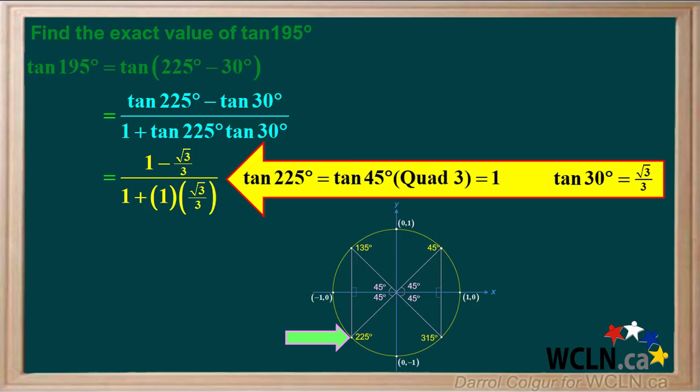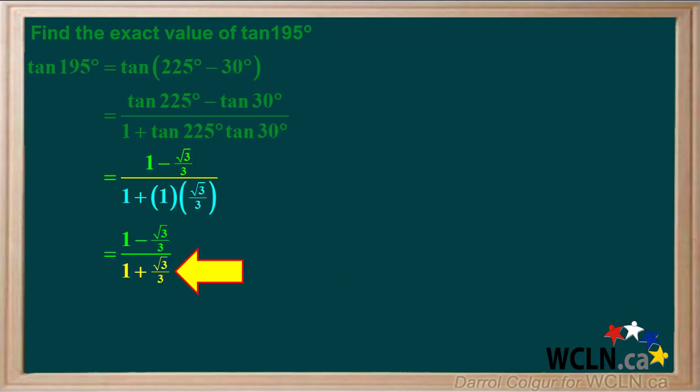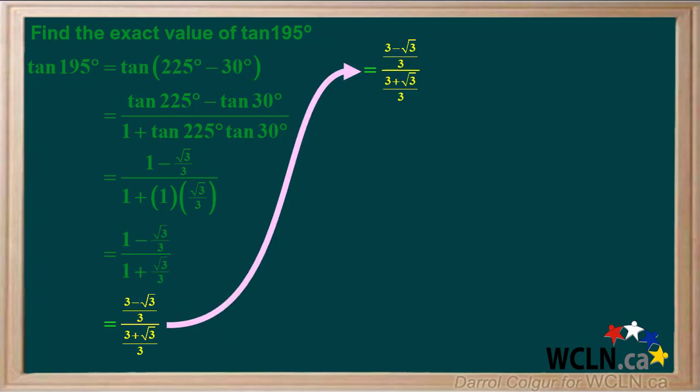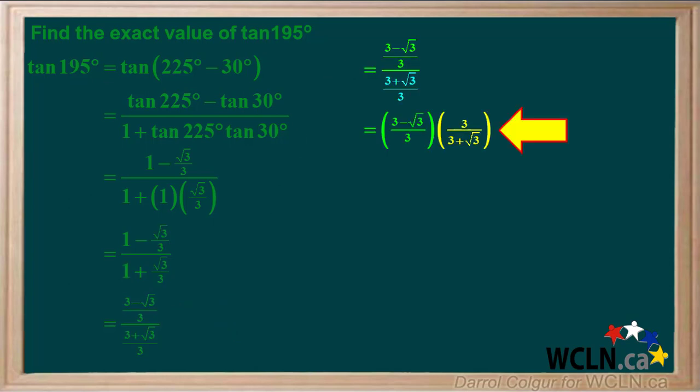We also know that tan 30° = √3/3. So these two values can be inserted into the expression. The denominator simplifies to 1 + √3/3. Since 1 = 3/3, the numerator 1 − √3/3 is the same as (3 − √3)/3. We'll continue the solution: dividing by (3 + √3)/3 is the same as multiplying by 3/(3 + √3).